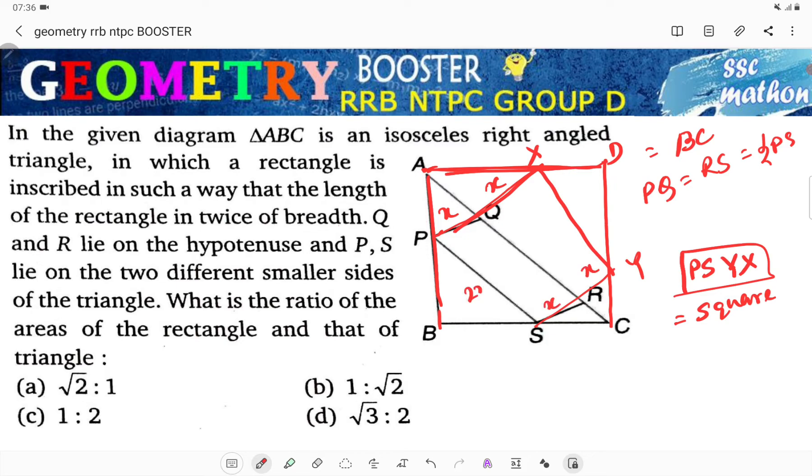So this is x, this is 2x, so the rectangle is x squared. Now this x squared inside the outer square is half. Can you see how?